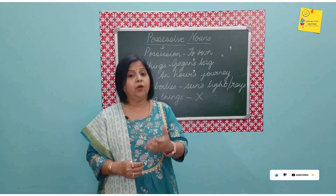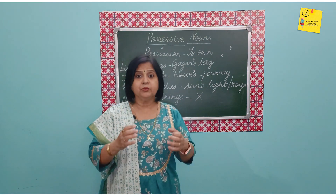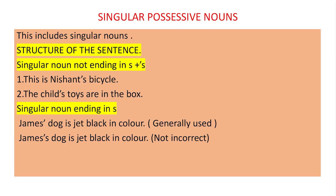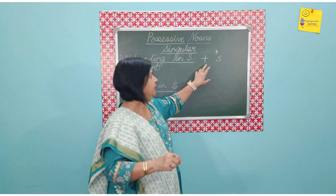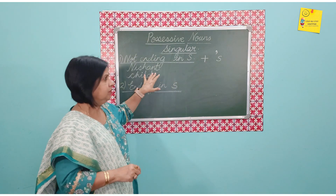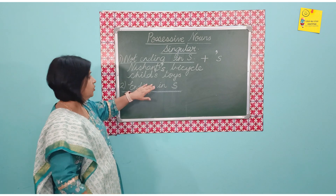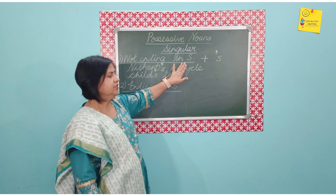Now let us see how we form the possessive of singular nouns, plural nouns, and irregular nouns. For singular possessive nouns, there are two forms. When the singular noun does not end in S, it is very easy — just add apostrophe S. For example, the bicycle of Nishanth becomes Nishanth's bicycle. Similarly, the toys of the child becomes the child's toys.